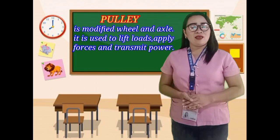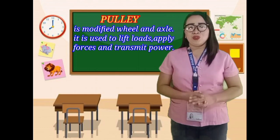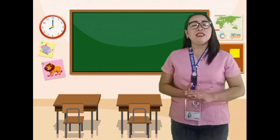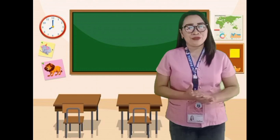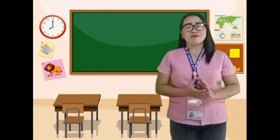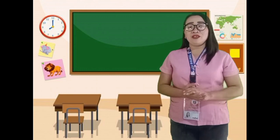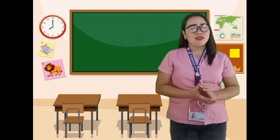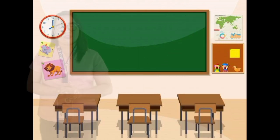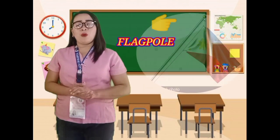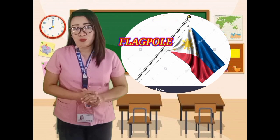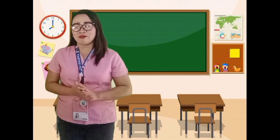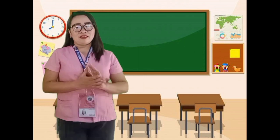The next type of simple machine is the pulley. A pulley is a modified wheel and axle. It is used to lift loads, apply forces, and transmit power. A pulley has a rope sliding on a groove, and the groove prevents the rope from slipping. A pulley can be used to make heavy work more manageable. A flagpole that we can see in school is an example of a pulley. When you pull down the rope, the direction of the force is redirected by the pulley and you raise the flag.